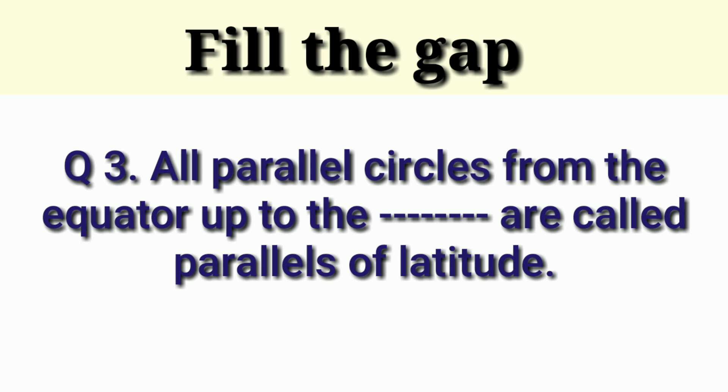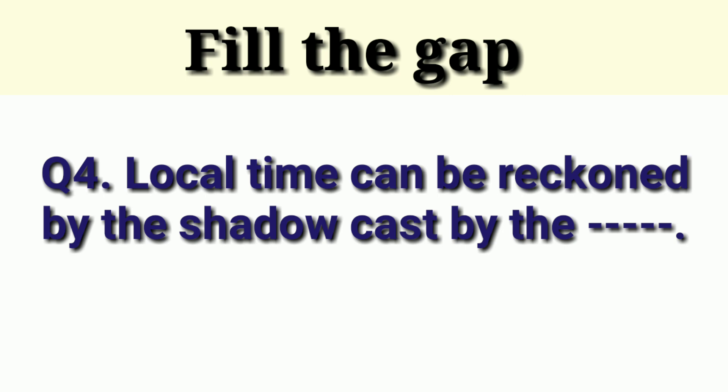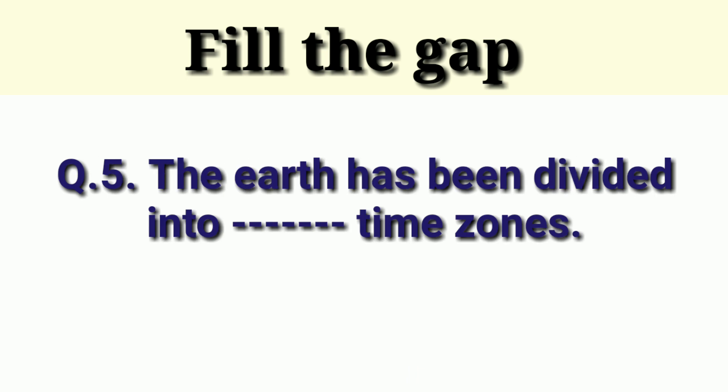Next question is all parallel circles from the equator up to the dash are called parallels of latitude. Answer is poles, up to the poles. Next question is local time can be reckoned by the shadow cast by the dash. Answer is sun. Shadow cast by sun.